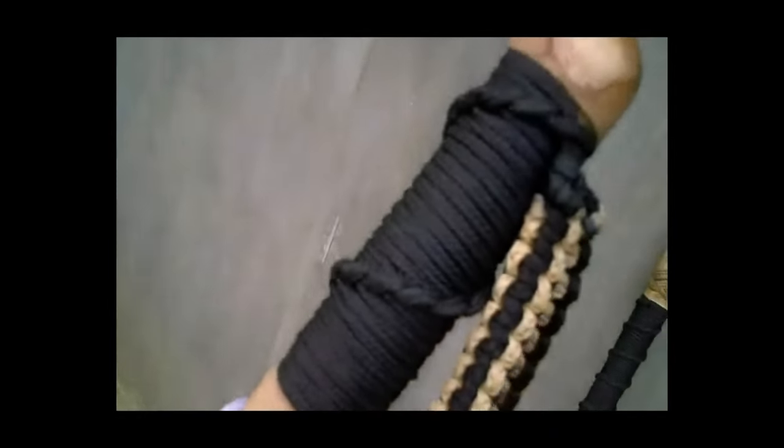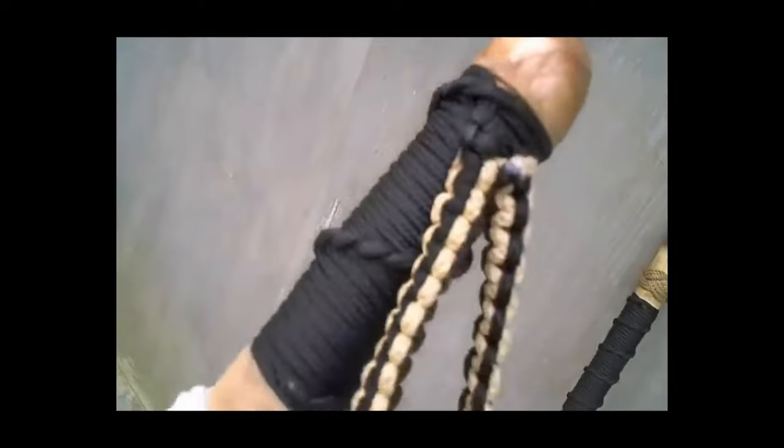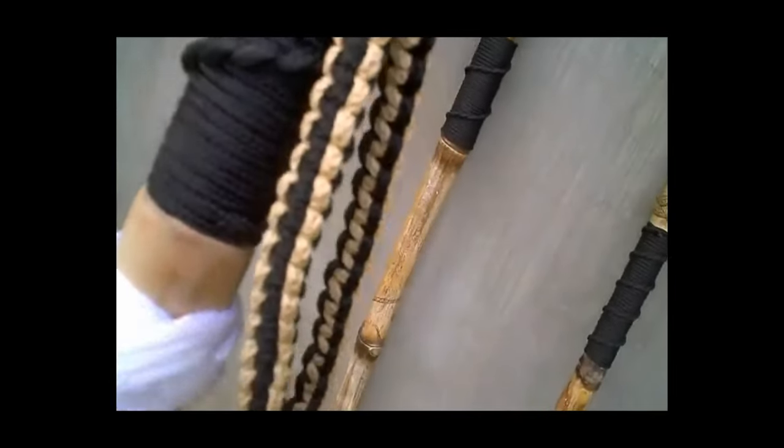This is a mahogany stick with a little Turk's head and an indented spiral braid. And then I put on a handle on it with a Solomon's braid on it.